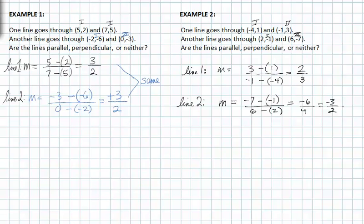If we compare these two slopes together, they are opposite reciprocals of each other, because if you flip this one over and change its sign, you would get this one. So they're opposite reciprocals. So these lines are perpendicular and these lines are parallel.